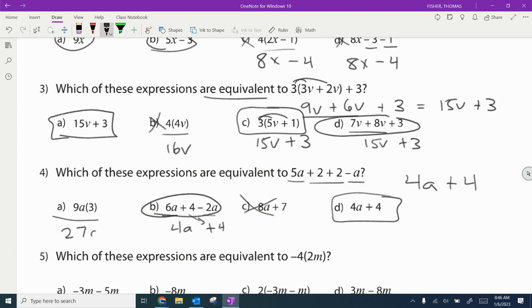And this would be 27a. So our only equivalent ones would be b and d. Because they have the exact same value as 4a plus 4. So using just what we know about combining like terms and distributing, we just rewrite these in as simple form as possible. And then we just pick the one that matches.